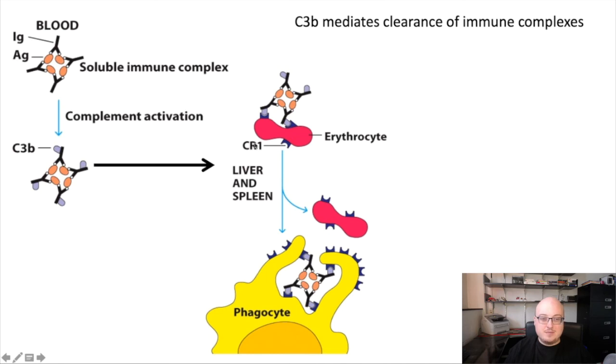Remember, CR1 is a C3B receptor. And as it turns out, red blood cells have CR1 on their surface. And the CR1 binds to any C3B that it sees. And these red blood cells then sort of drag the immune complexes along with them. They're sort of hanging on by that C3B-CR1 interaction. And the red blood cells themselves don't do much with those immune complexes, but they do take them back to the spleen and the liver, which are full of phagocytes like macrophages.